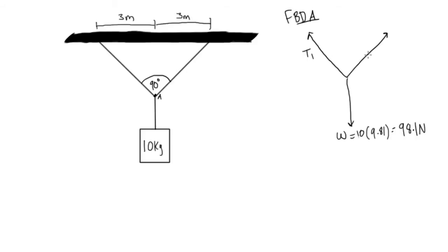Alright, so again let's call this tension one, let's call this tension two. What else do we know? We know that this angle here is 90 degrees. So let's look at this, sum of forces in the x direction is going to be equal to zero.